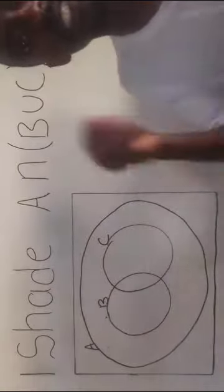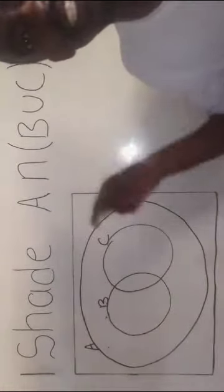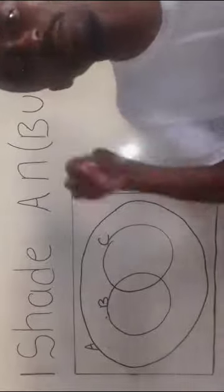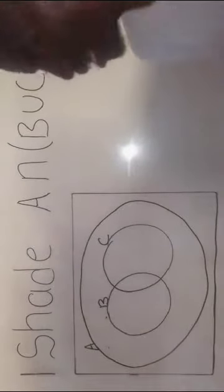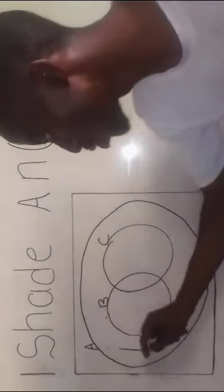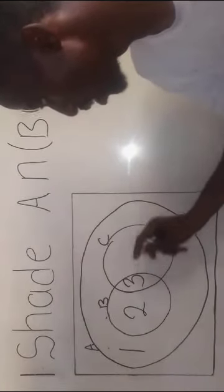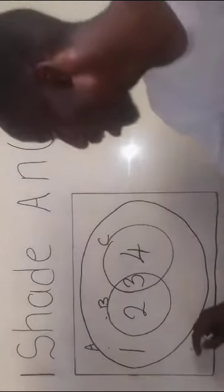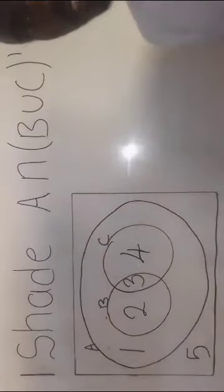Now the best and the most reliable method for us to answer this question is to label each part of a set a number like this here. This one, two, three, four, and the five outside.